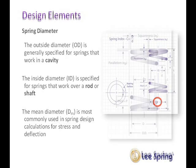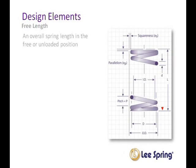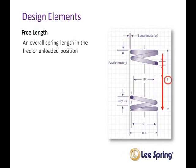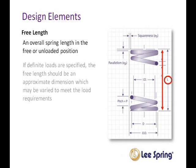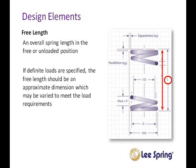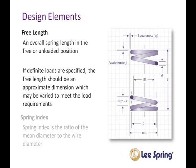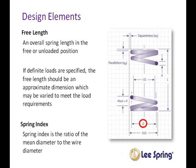Free length is the overall spring length in the free or unloaded position. If definite loads are specified, the free length should be an approximate dimension which may be varied to meet the load requirements. Spring index is defined as the ratio of the mean diameter to the wire diameter.